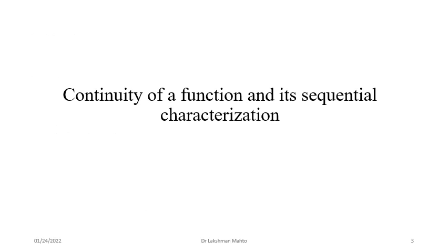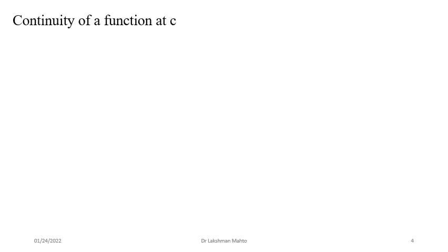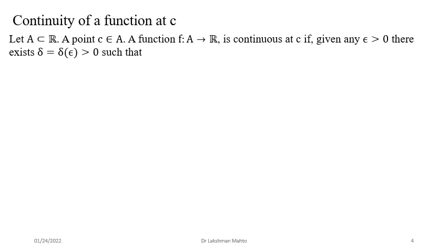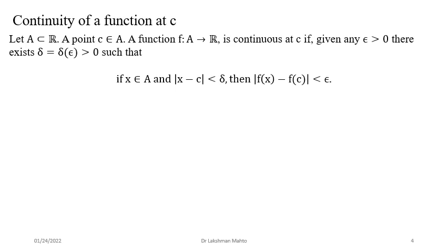Coming to continuity and its sequential criteria: I will first give the epsilon-delta definition. Consider A is a subset of real numbers and c is a point of that set A. We define a function f from A to R. Then f is continuous at point c if, for a given epsilon, there exists a delta such that when x comes from the delta neighborhood of c, it implies that f(x) comes from the epsilon neighborhood of f(c).